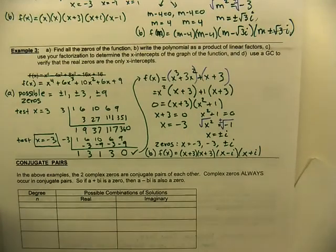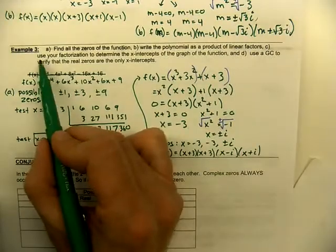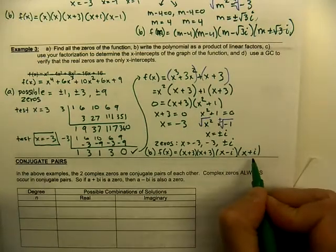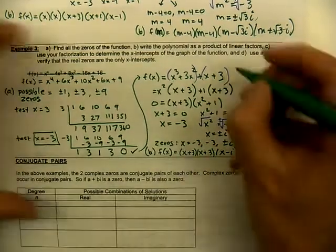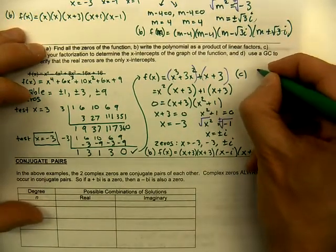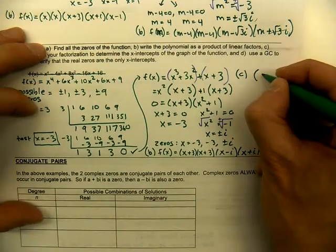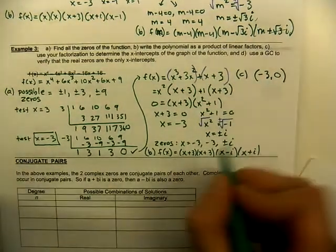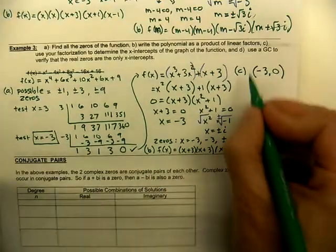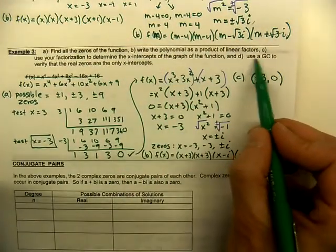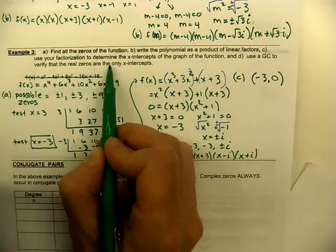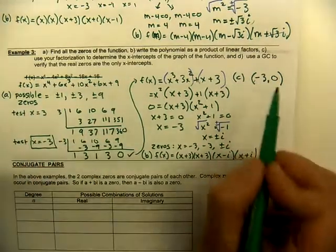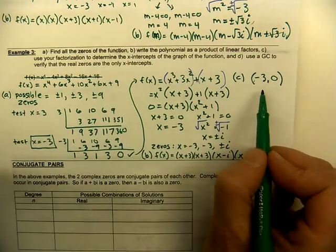Our zeros are negative three (with multiplicity two) and plus or minus i — four zeros total, matching the fourth degree polynomial. Part B: f(x) = (x plus three)(x plus three)(x minus i)(x plus i). For part C, finding x-intercepts: imaginary numbers are not x-intercepts, so only negative three qualifies. Due to multiplicity, there's one x-intercept at negative three. Part D asks you to verify using a graphing calculator that this is the only x-intercept visible on the graph.